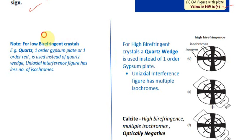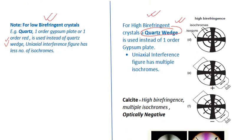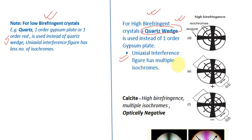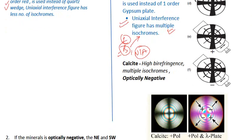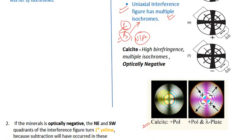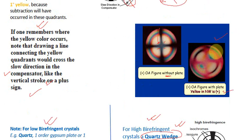For low-birefringence crystals like quartz, the first-order gypsum plate (first-order red plate) is used. For high-birefringence crystals, the quartz wedge is used instead. High-birefringence crystals like calcite have many isochromes (e.g., five or more rings), while low-birefringence crystals like quartz have very few.